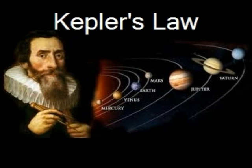Kepler's First Law: Orbits are Elliptical. With Tycho Brahe's observations, Kepler set out to determine if the paths of the planets could be described with a curve. By trial and error, he discovered that an ellipse with the Sun at one focus could accurately describe the orbit of a planet around the Sun. Once Kepler figured out that planets move around the Sun on ellipses, he then discovered another interesting fact about the speeds of planets as they go around the Sun.